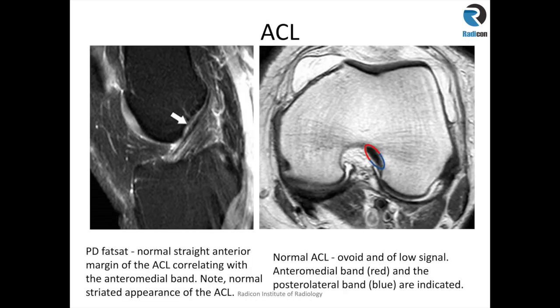This is what a normal ACL looks like. It is normally a striated structure which runs smoothly from the femoral condyle to the anterior aspect of the tibia, without any laxity. These signal changes or striated appearances are normal — please don't confuse them with tears. It is just due to intrasubstance fat that you get the striated appearance of the ACL.